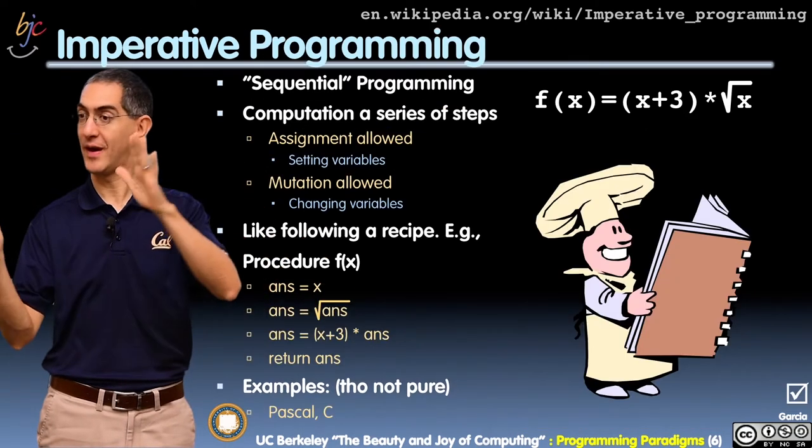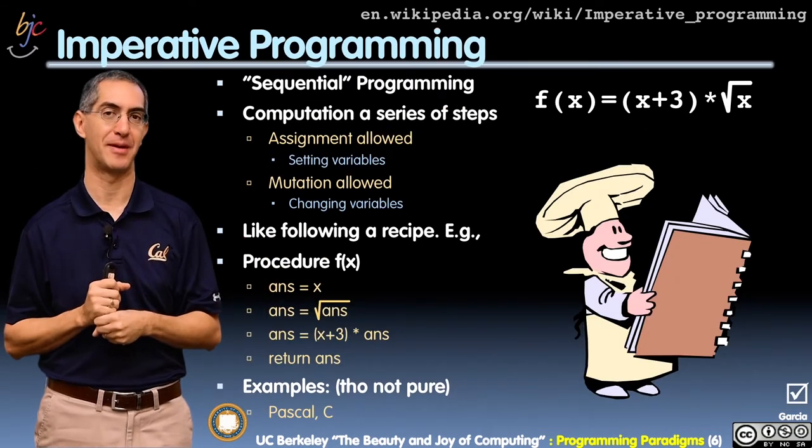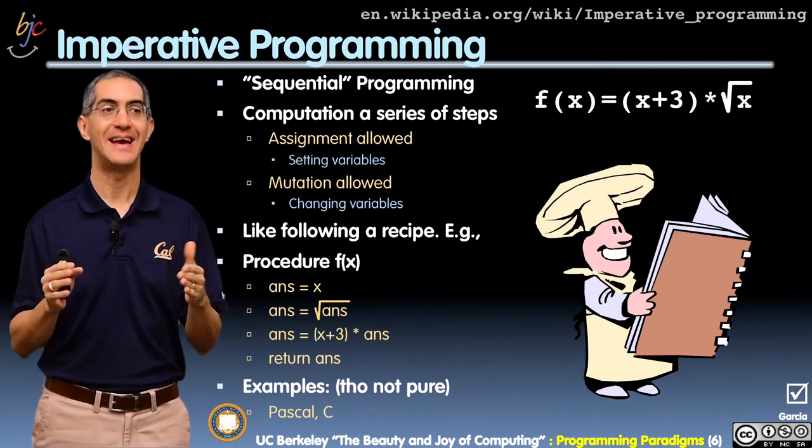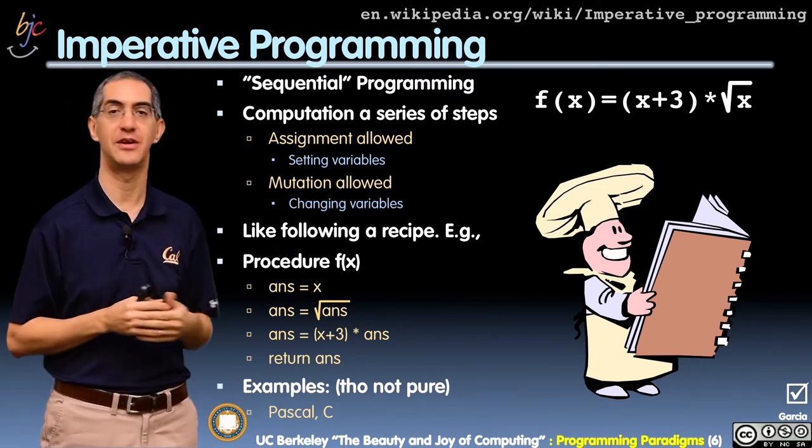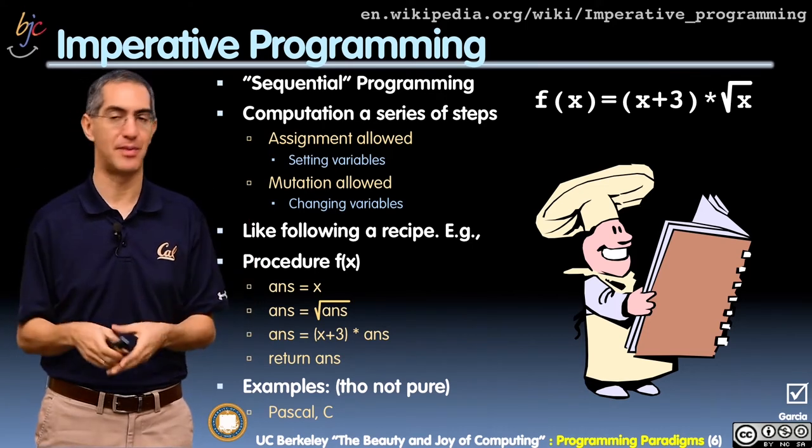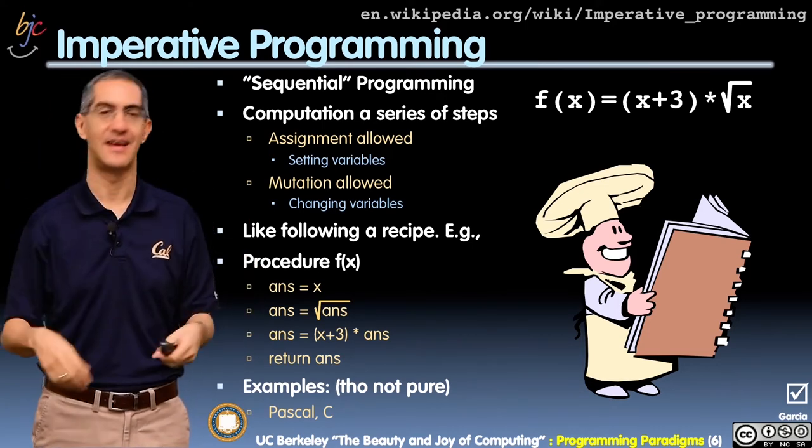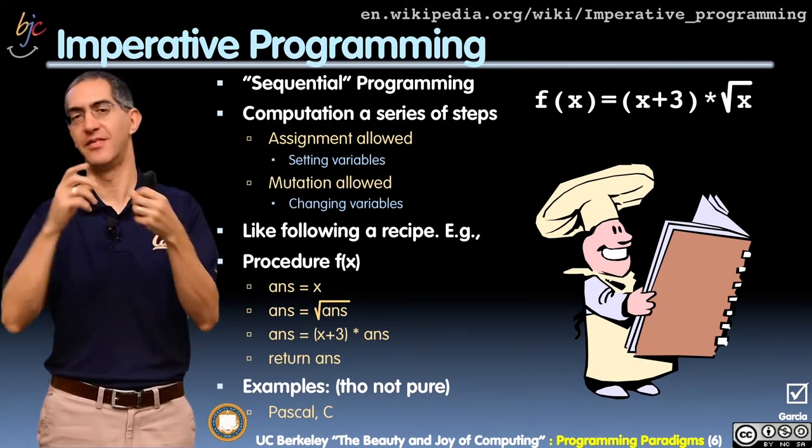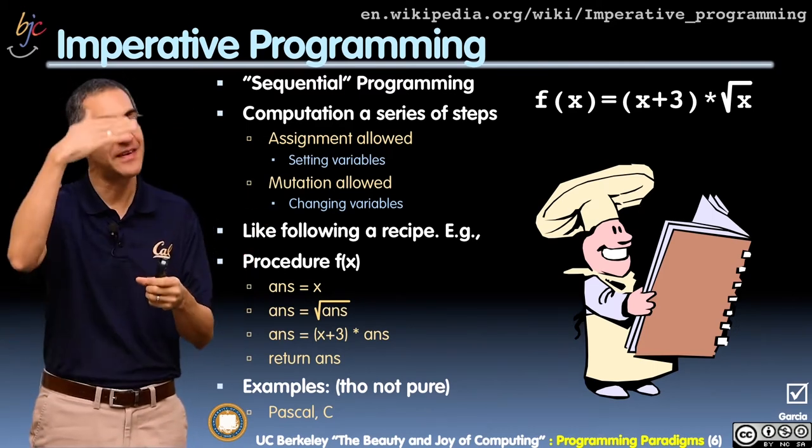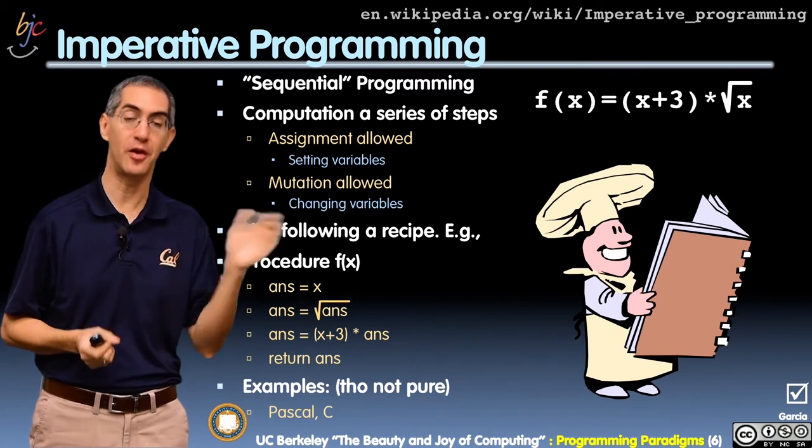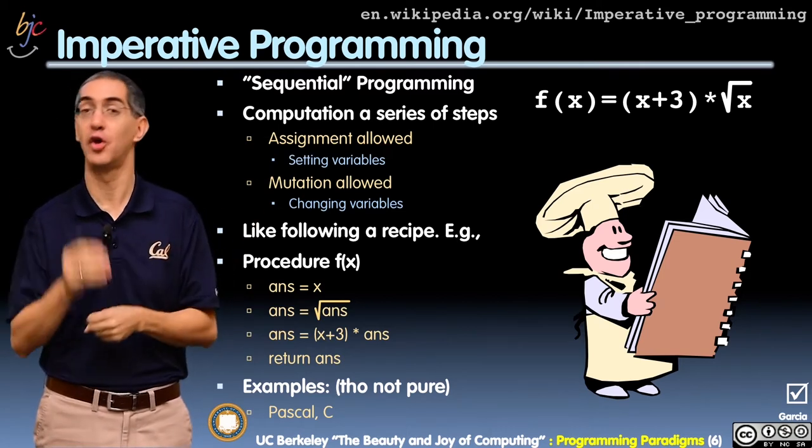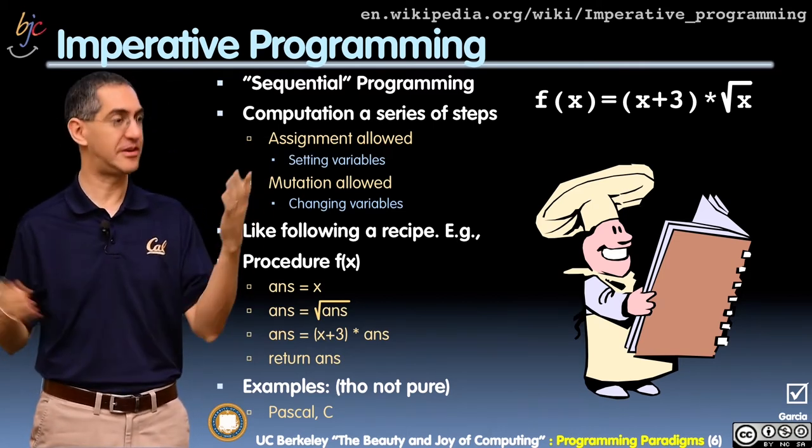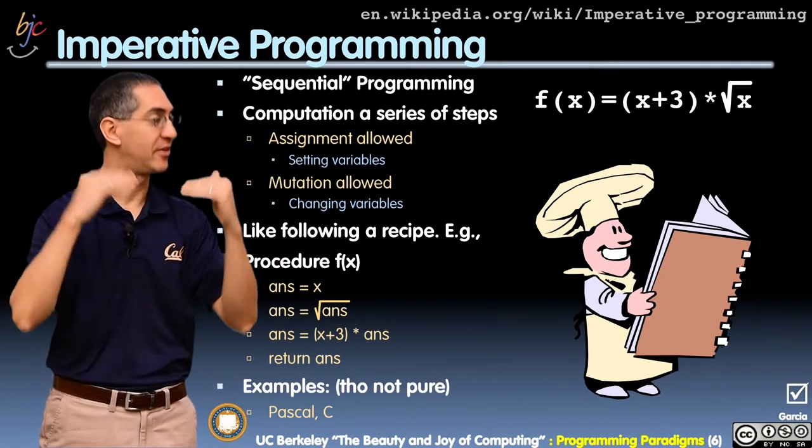New idea! This is called imperative programming. Imperative programming is like a recipe. First, break the eggs. Then scramble them. Then add some chives. Then put them in a pot. It's all these steps. Another word for this is sequential—you're doing one after the other, after the other, after the other.